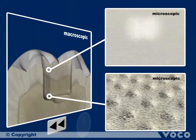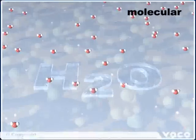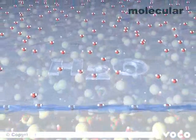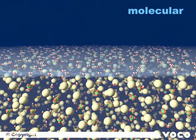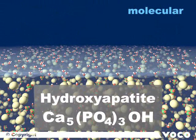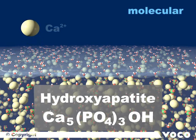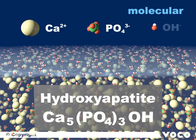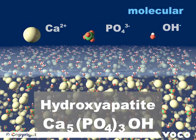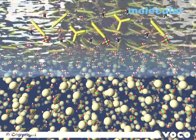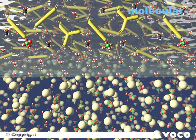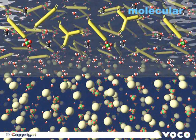By looking again at the process on molecular level, we will understand how the chemical mechanism of the connection between tooth substance and composite material works. Due to the preparation, there is a thin water layer on the tooth. Hydroxyapatite, the main component of the tooth, consists of calcium, phosphate and hydroxy ions. The adhesive is applied. For reasons of better clarity, only the first layer is shown in the next step.